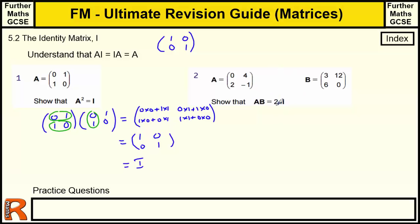OK, so show that AB is 24I. So we've just got AB. And then 24I is equal to 24, 0, 0, 24. So we've just got to show that. So A, B, 0, 4, 2, minus 1, times by 3, 6, 12, 0. So again, let's spell it out.